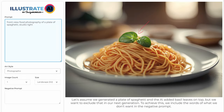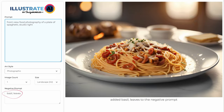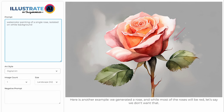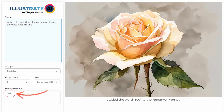For the negative prompt: let's assume we generated a plate of spaghetti and the AI added basil leaves on top, but we want to exclude that in our next generation. To achieve this, we include the words of what we don't want in the negative prompt. I added basil and leaves to the negative prompt, and as you can see, the basil leaves are now gone. Here is another example — we generated a rose, and while most of the roses will be red, let's say we don't want that. I added the word red to the negative prompt, and now the rose is missing the color red. Negative prompts don't always work perfectly, but they can be very useful.